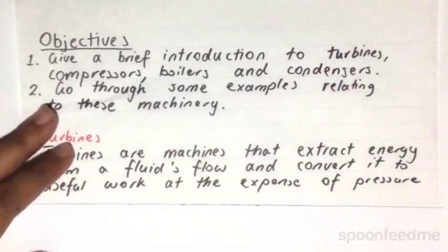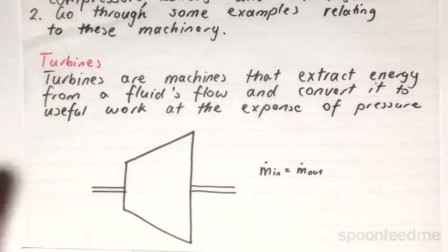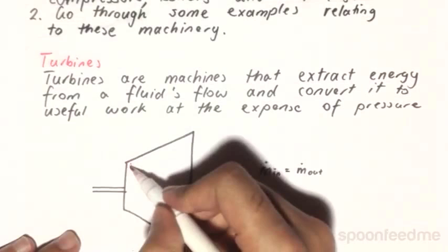A crude diagram is something like this, where the control volume that we are interested in is this right here.